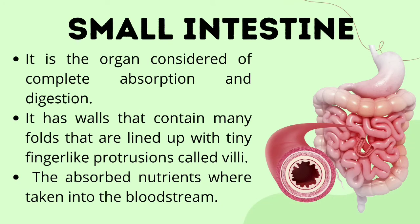For the small intestine, it is the organ responsible for complete absorption and digestion. It has walls containing many folds lined with tiny finger-like protrusions called villi. The absorbed nutrients are taken into the bloodstream. The small intestine absorbs nutrients through these finger-like protrusions called villi.